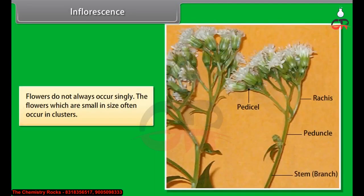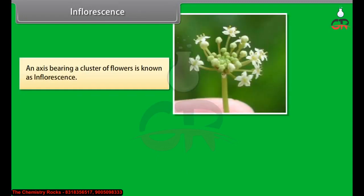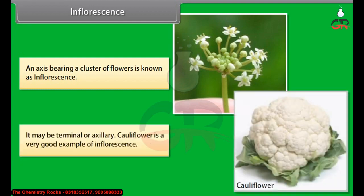Flowers do not always occur singly. Flowers which are small in size often occur in clusters. An axis bearing a cluster of flowers is known as inflorescence. It may be terminal or axillary. Cauliflower is a very good example of inflorescence.